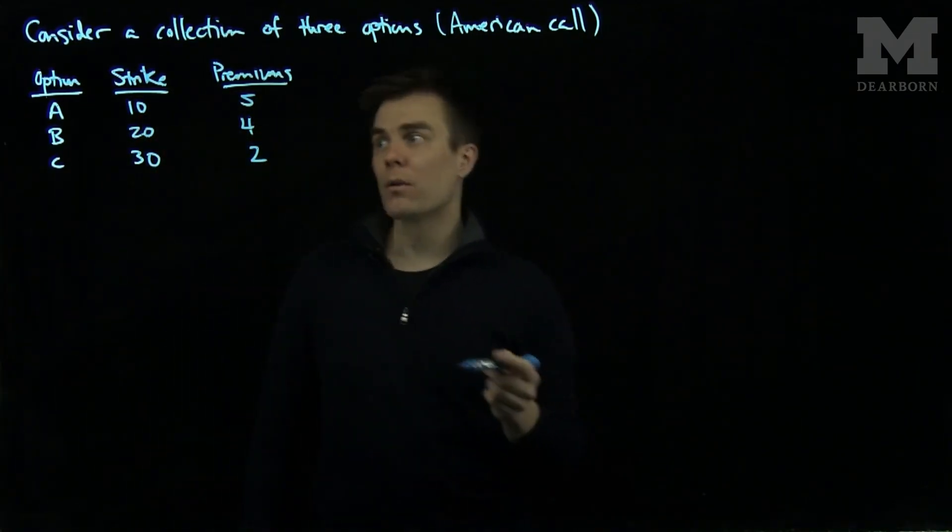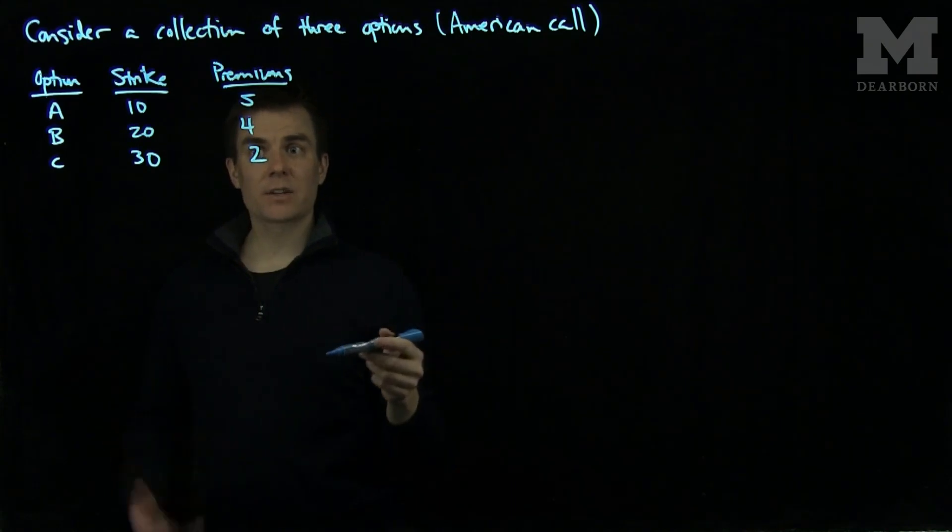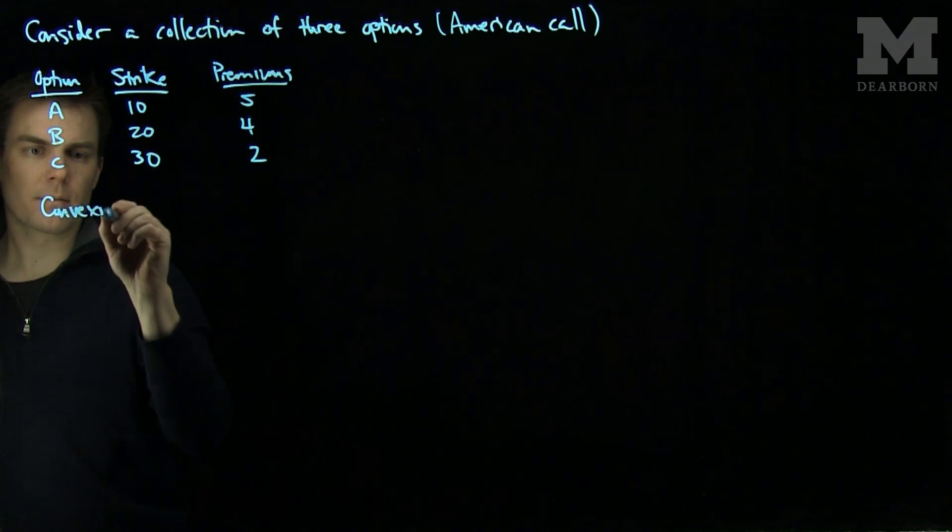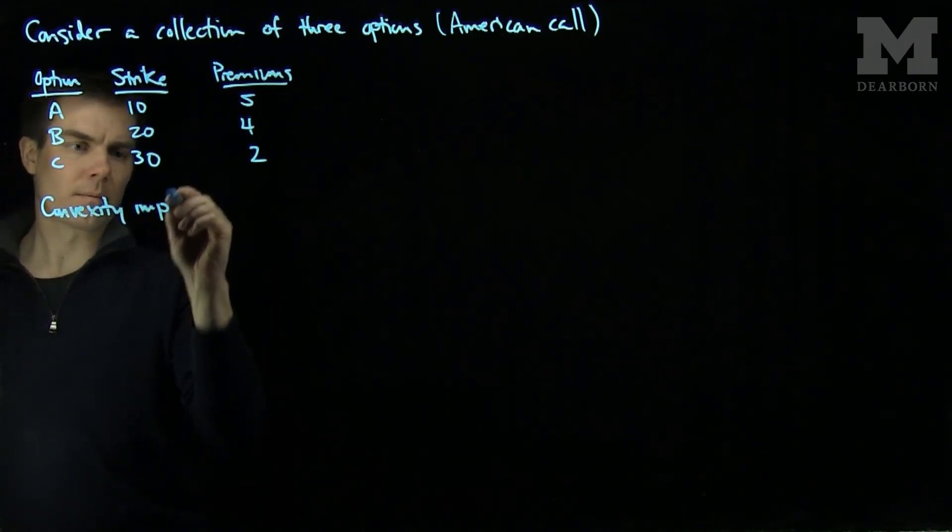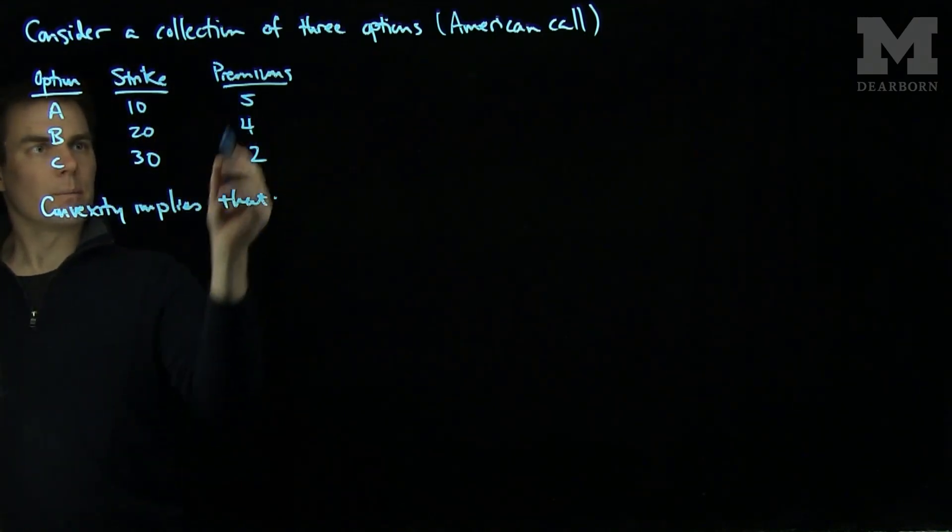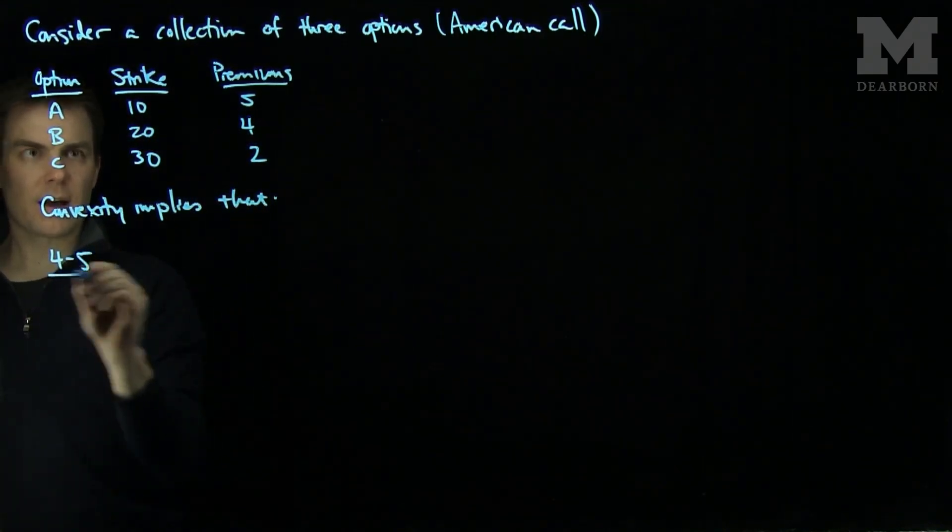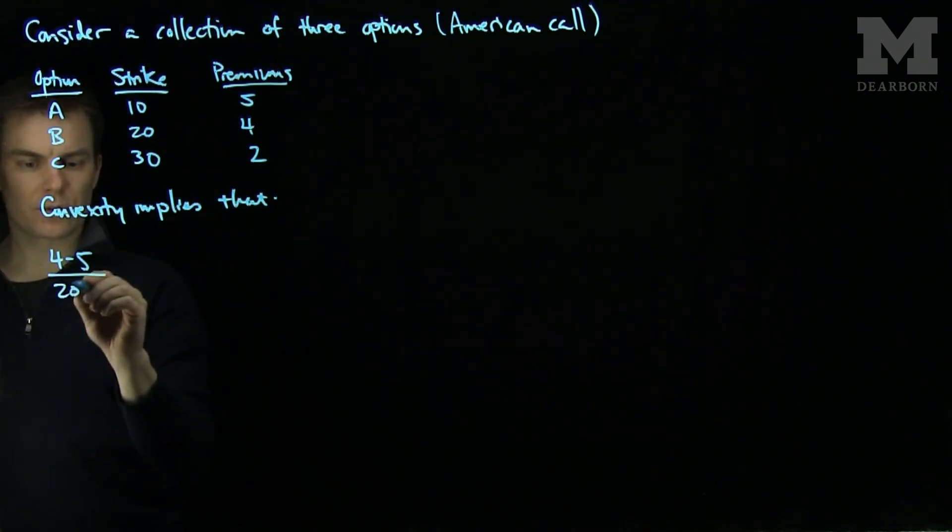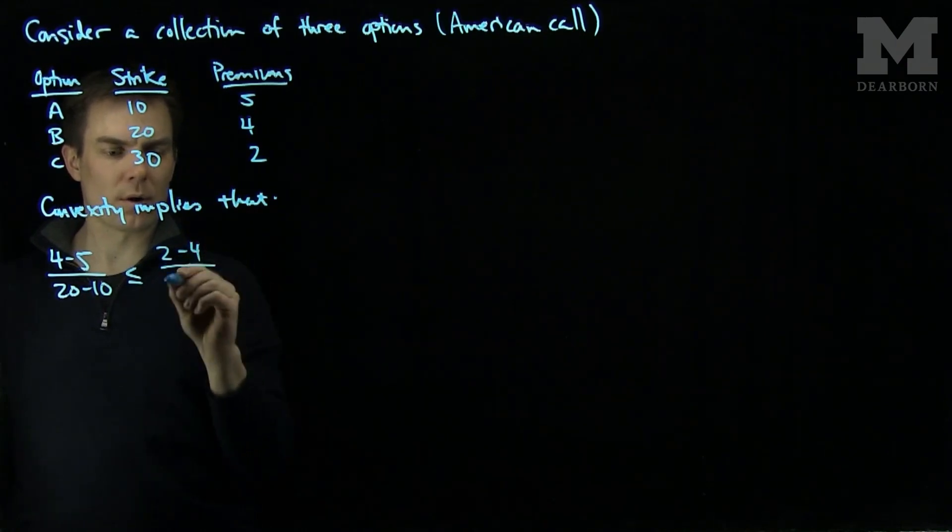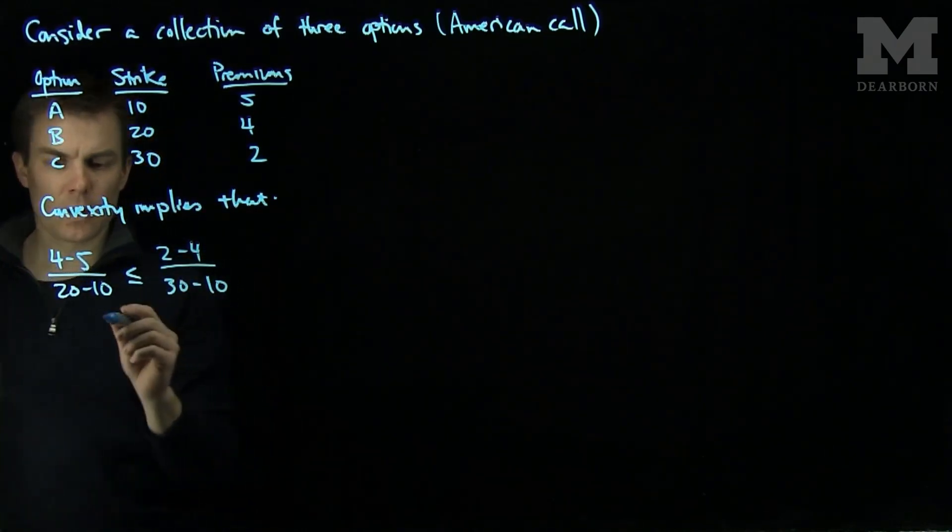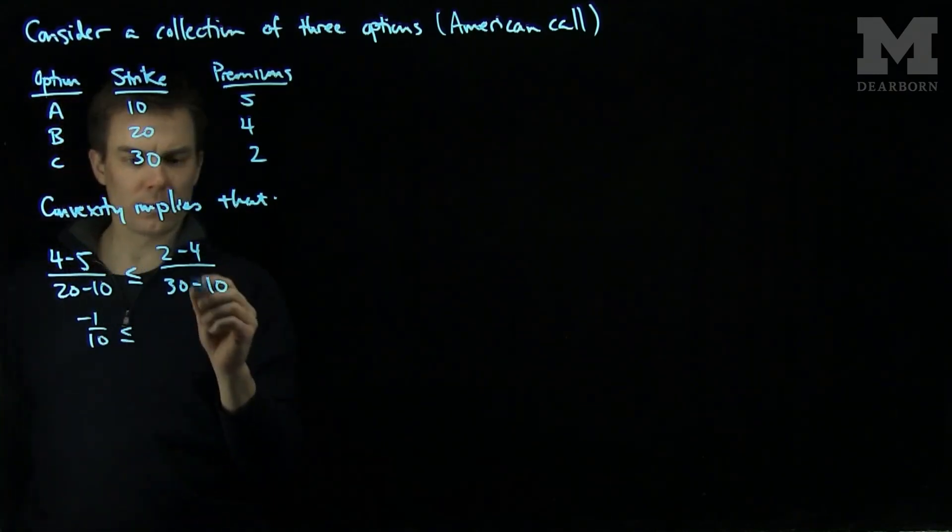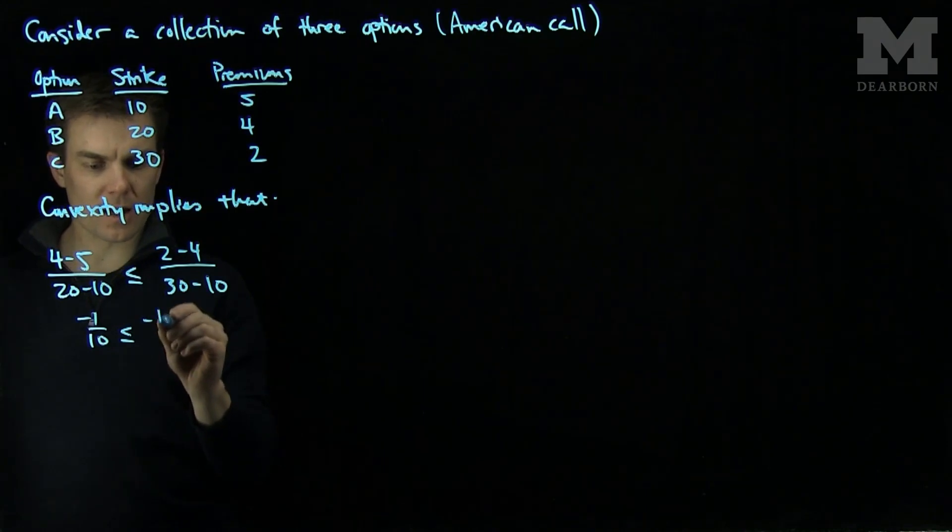We know that the American call option is a convex function of its strike price. By convexity, this implies that the premium differential 4 minus 5 over the strike differential 20 minus 10 is less than or equal to 2 minus 4 over 30 minus 10, which tells me that negative 1/10 is less than or equal to negative 2/10, or negative 1/5.